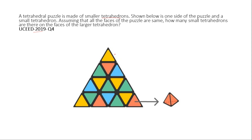First of all, look at the top of the tetrahedron. There is one single tetrahedron at the top. You can see single tetrahedrons here, here, here, and here — that's several single tetrahedrons visible on one face. Counting them: 1, 2, 3, 4, 5, 6, 7 — there are 7 tetrahedrons unique to one face. Since a tetrahedron has 4 faces, that gives 7 × 4 = 28.